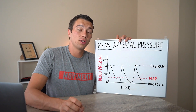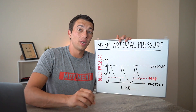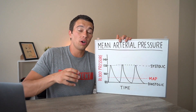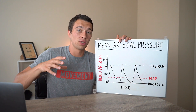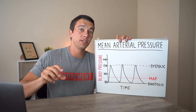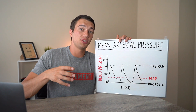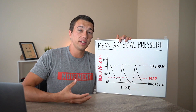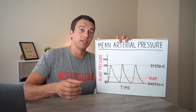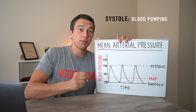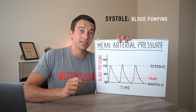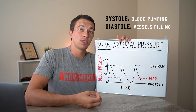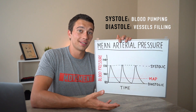We can think about mean arterial pressure as the average pressure throughout the cardiac cycle. There are times when our arteries are at higher pressure because the heart just pushed blood out into the arteries, and times when they're at lower pressure as the heart chamber is filling. Pushing blood out is called systole or systolic, and filling is called diastole or diastolic.